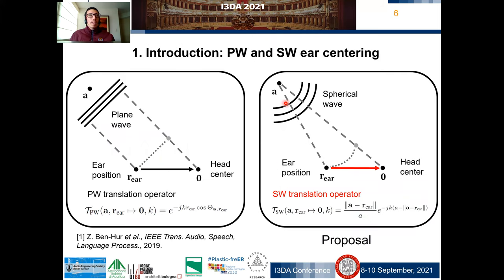Plane wave and spherical wave ear centering. Plane wave ear centering consists of translating the reference point from the ear to the center of the head, using a translation operator based on a free-field plane wave. Our proposal, spherical wave ear centering, incorporates the distance information, utilizing a translation operator based on a near-field spherical wave.